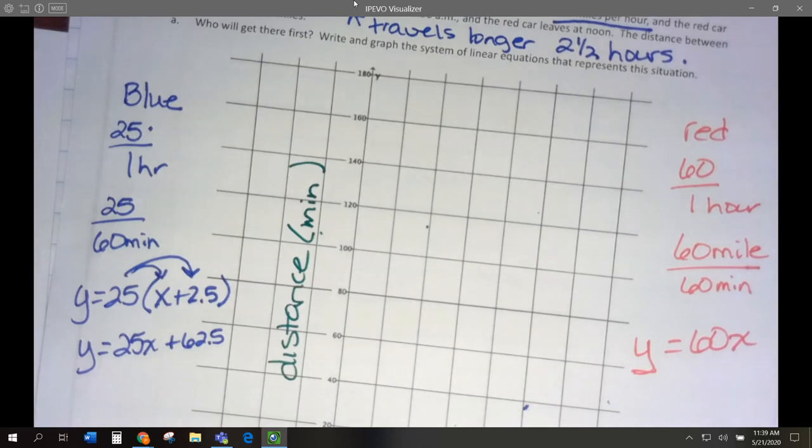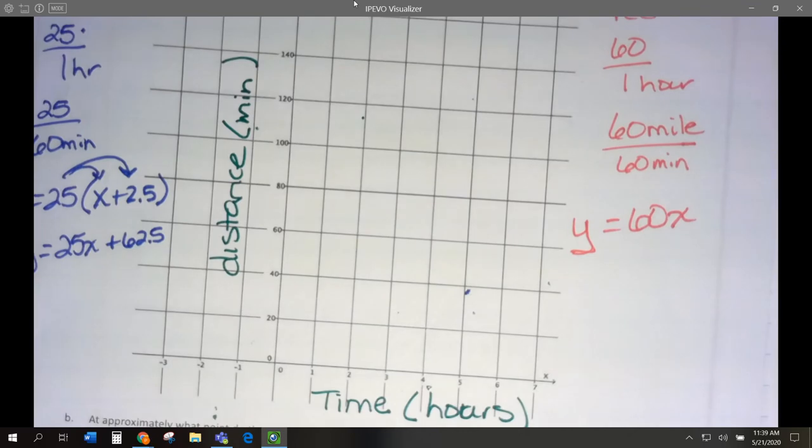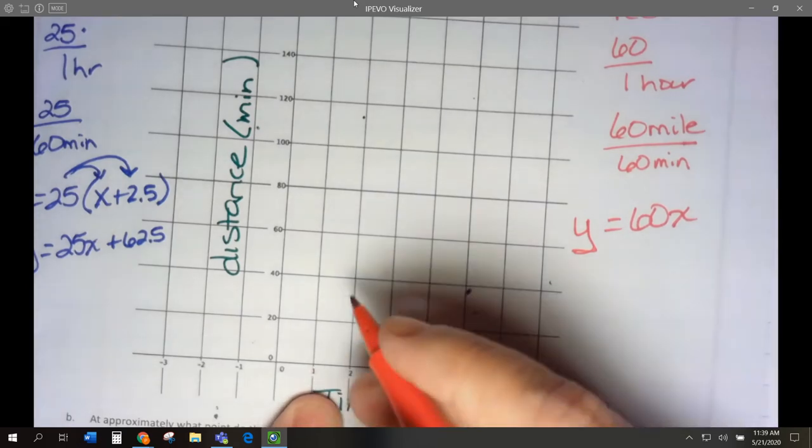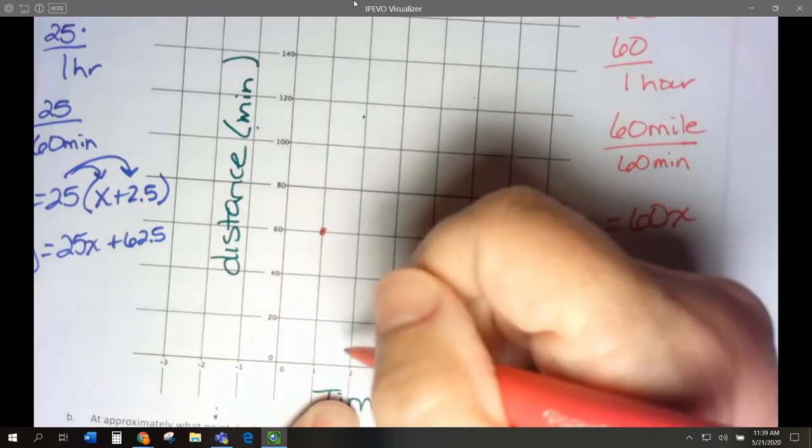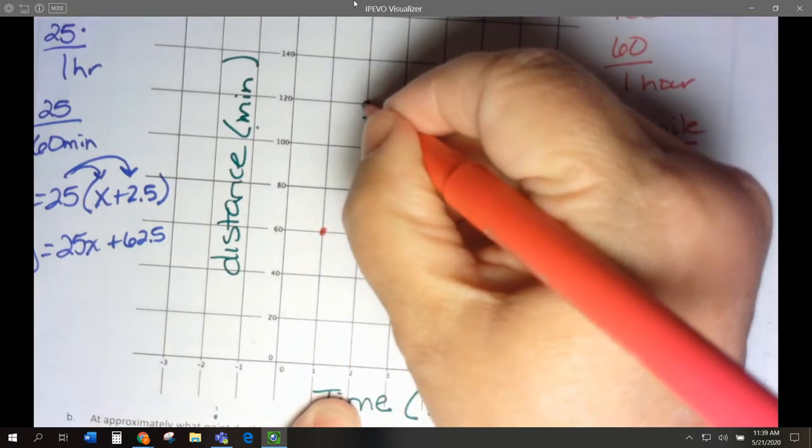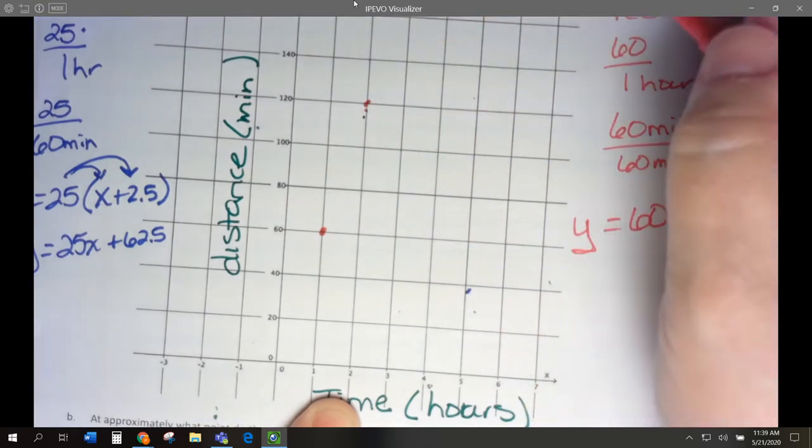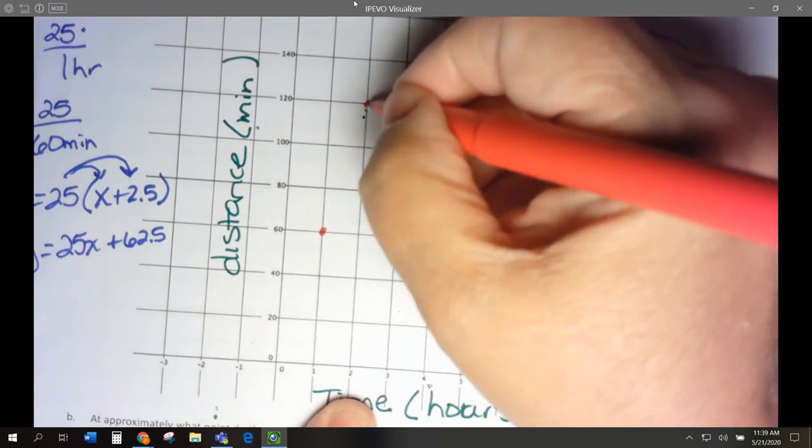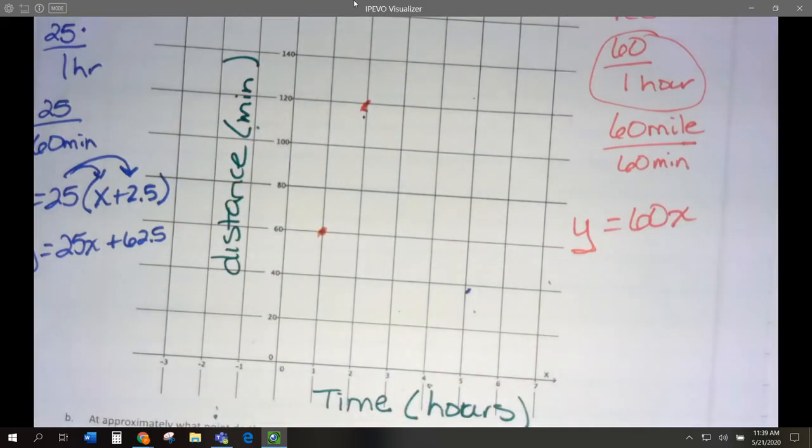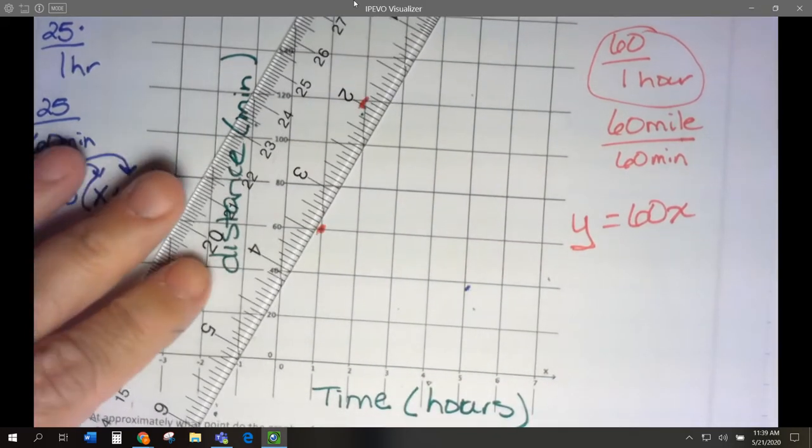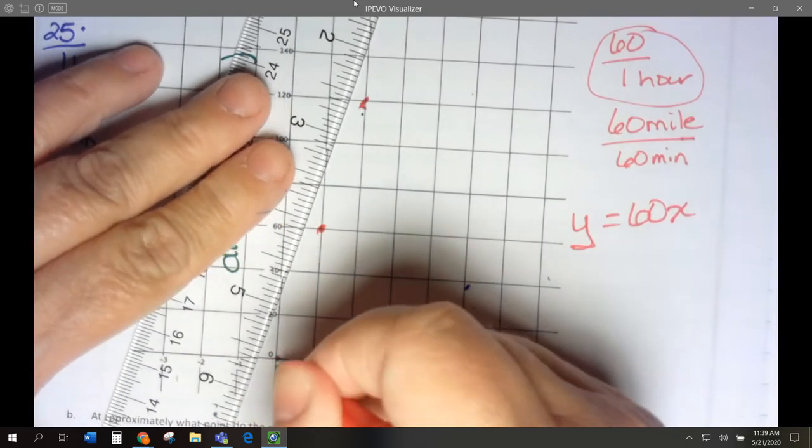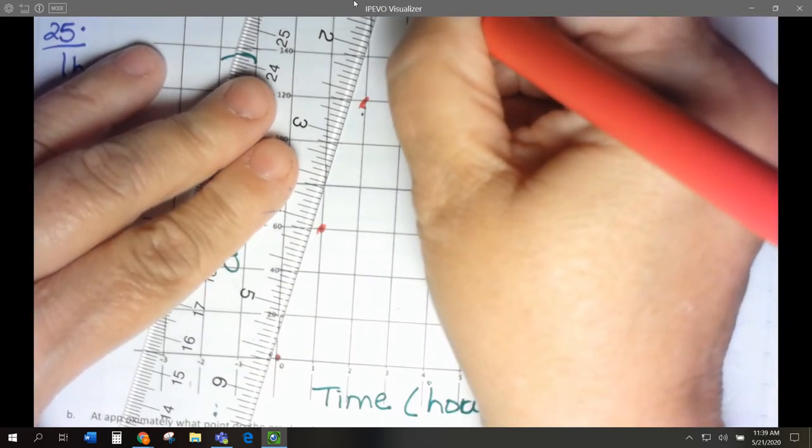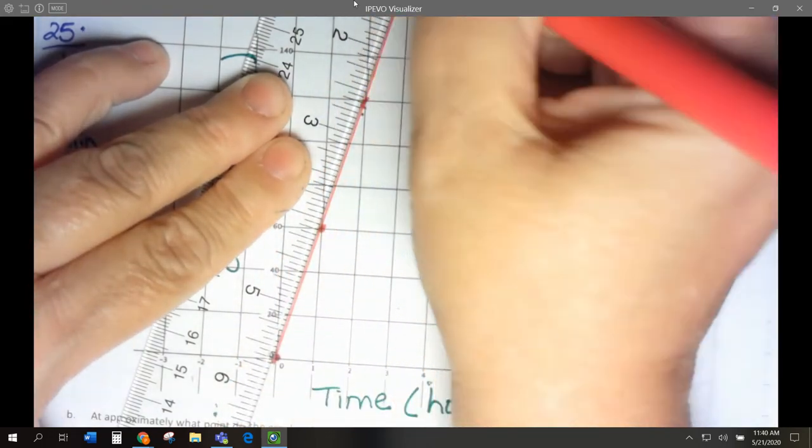So let's graph these. Starting with y equals 60x. One hour is 60. Two is 120. Remember rise of 20, 40, 60. We're on a 1. 60 over 1. And we're going to go 20, 40, 60. So this is our red car. So let me grab this. Oops, I made a mistake. 1 over 2. I should only go over 1. So there's our red car.